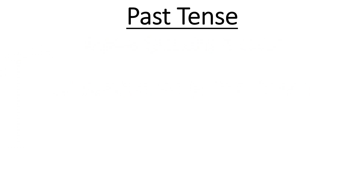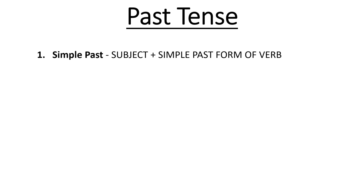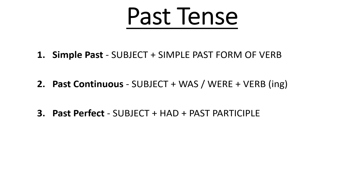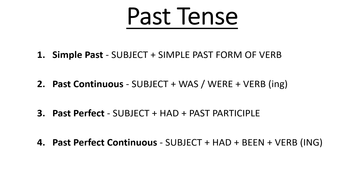Past Tense. I already know the 4 types. Simple Past: the structure is Subject plus simple past form of verb. Second: Past Continuous — Subject plus was/were plus verb in its -ing form. Next is Past Perfect — Subject plus had plus past participle form of verb. And finally, Past Perfect Continuous — Subject plus had plus been plus verb in its -ing form.